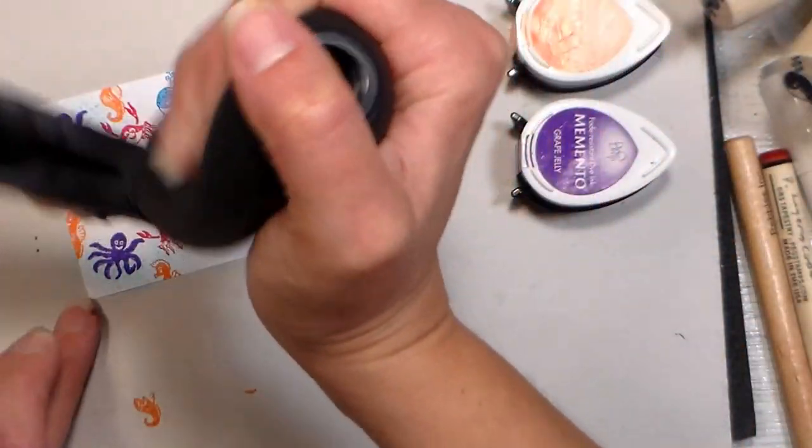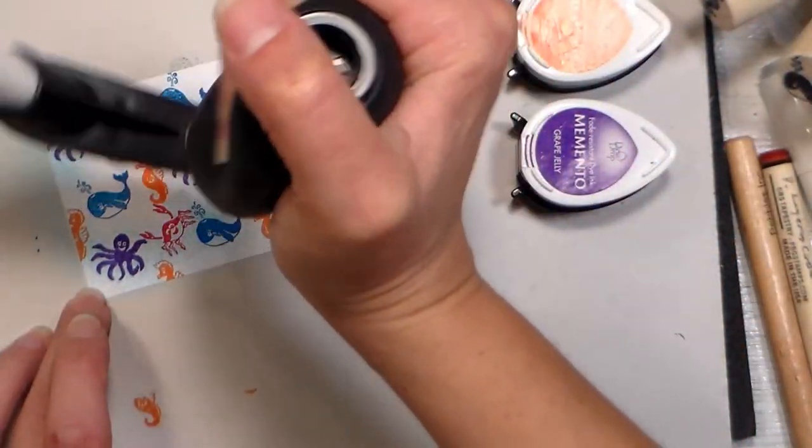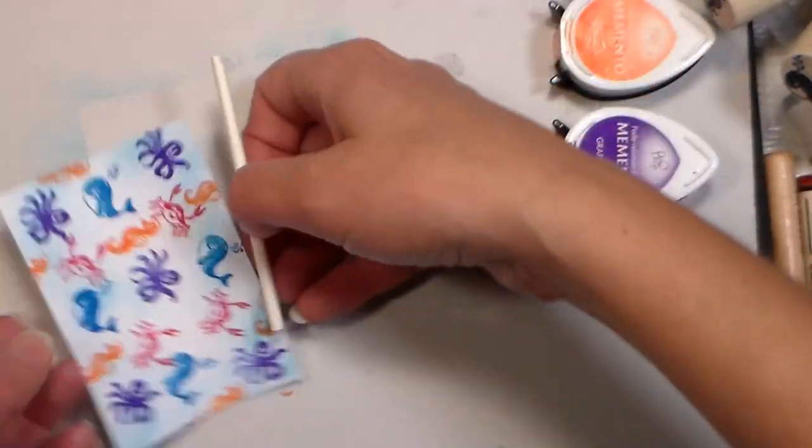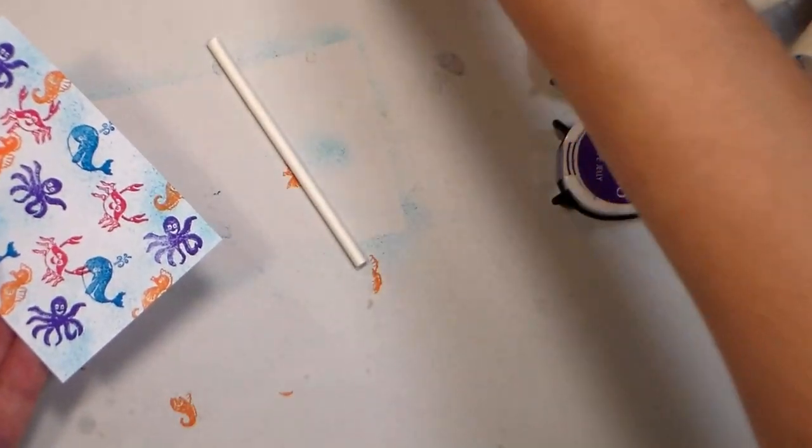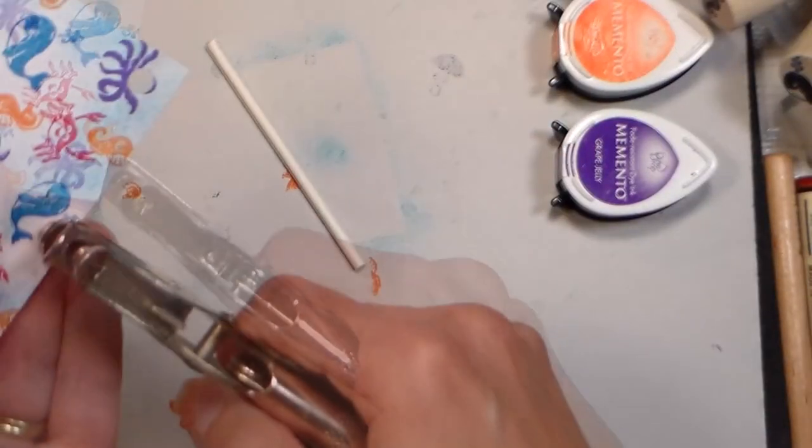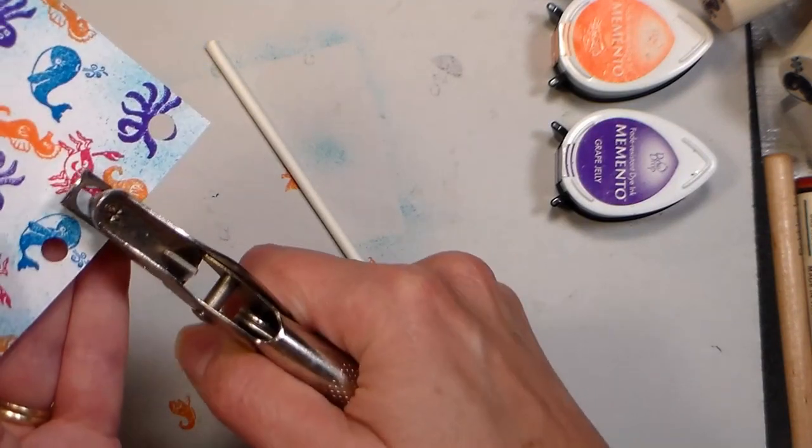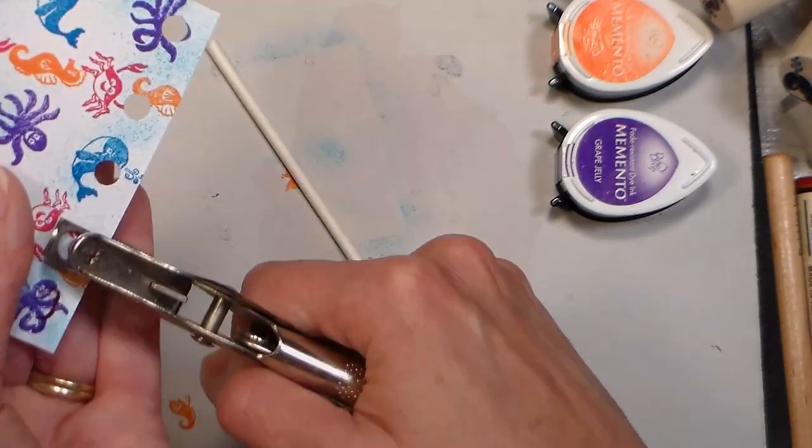Now this is a really fun technique. I'm using a marker spritzer. I think mine is from Stampin' Up. I know Tim Holtz makes one. You can find them on Amazon and eBay. They're just like an atomizer, so you can turn any of your markers, water-based or otherwise, into an airbrush. And it's really great for these little techniques, because it's not gonna make any of your water-based ink run if you go over that.